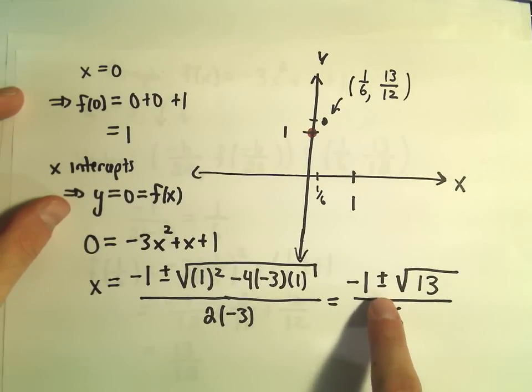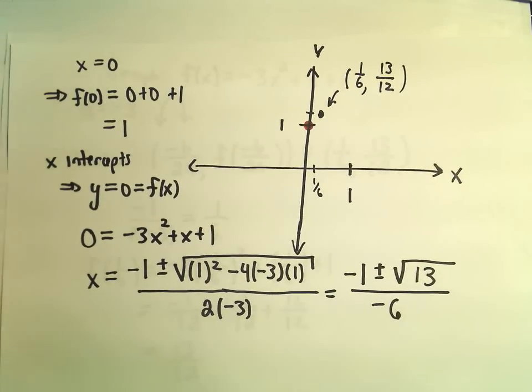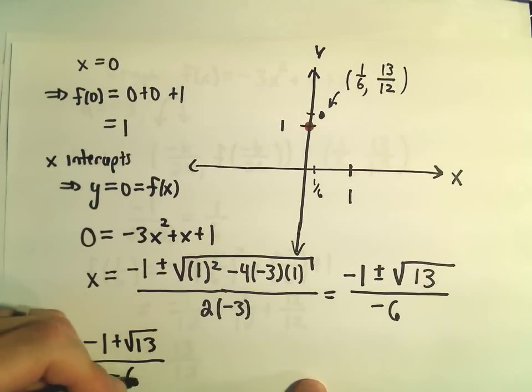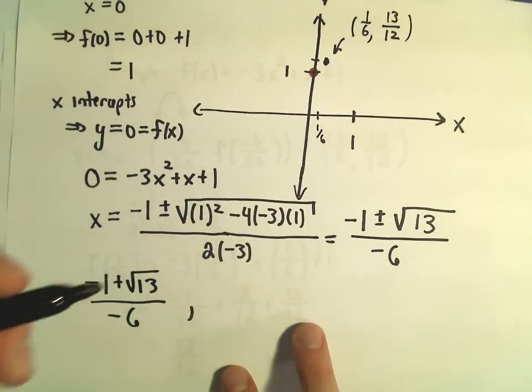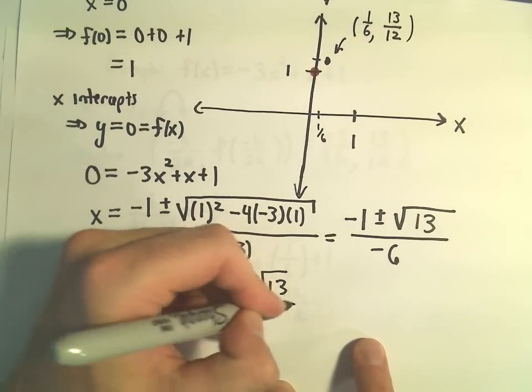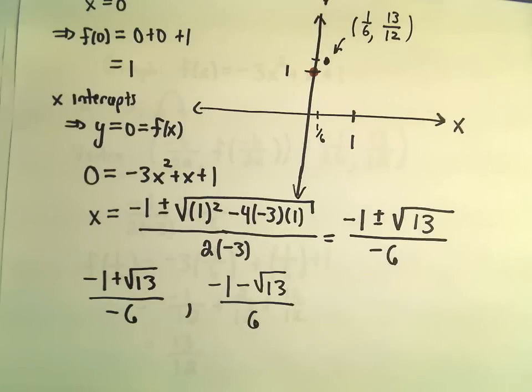And now we've got our two x-intercepts. Negative 1 plus root 13 over negative 6, and negative 1 minus root 13 over negative 6. And I think what I'm going to do, just to give myself kind of a better intuition about these numbers, is I'm going to approximate them a little bit, just to kind of figure out where they're sitting on the x-axis.